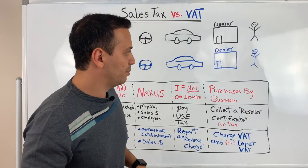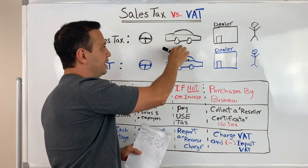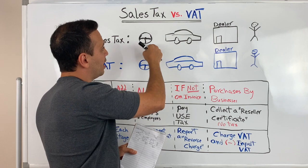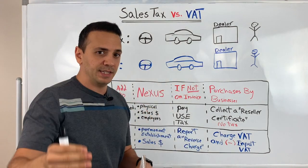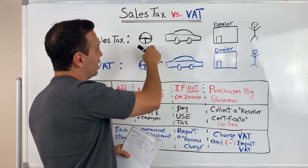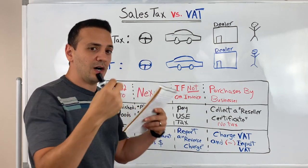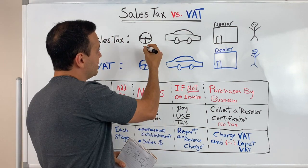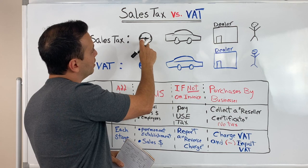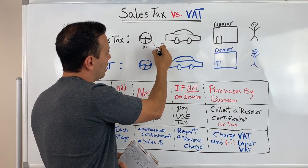Going through the example of manufacturing a vehicle — let's assume that this car manufacturer needs to source the parts to assemble the vehicle. They will go out and buy a steering wheel and a seat and all of the things they need. They'll go to a supplier of steering wheels and buy a steering wheel for $100 each. So the steering wheel manufacturer will sell it to the car manufacturer for $100.